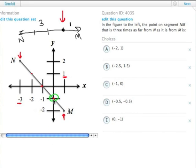That is the point 0, negative 1 on our line. That is answer choice E.